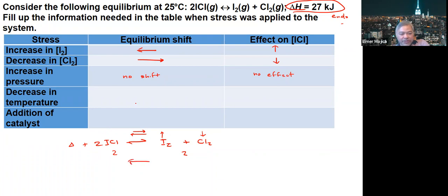So the backward reaction is favored, and there's an increase in the concentration of ICl because the backward reaction is favored.